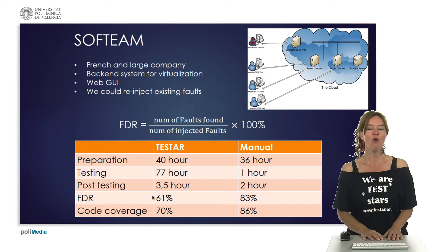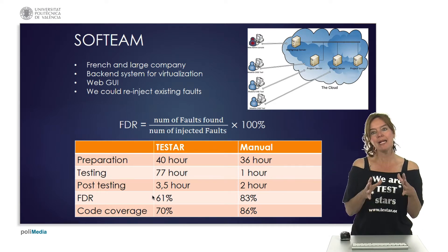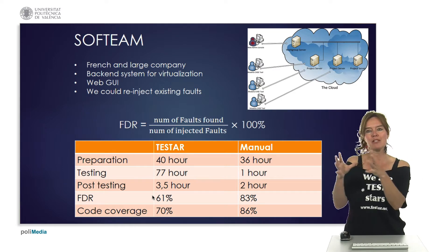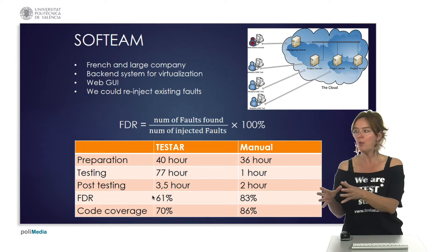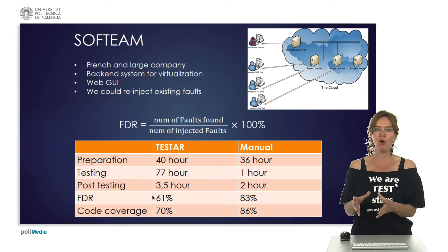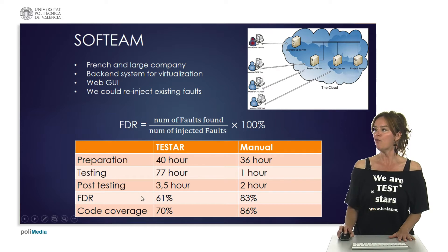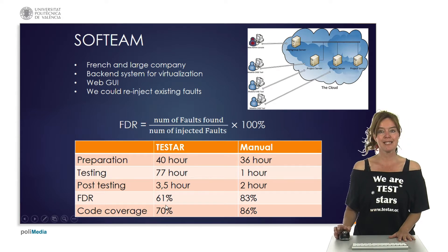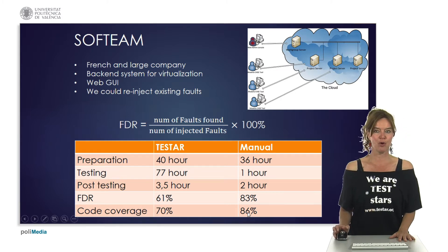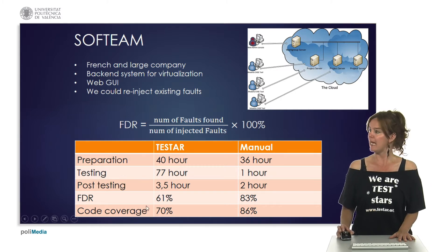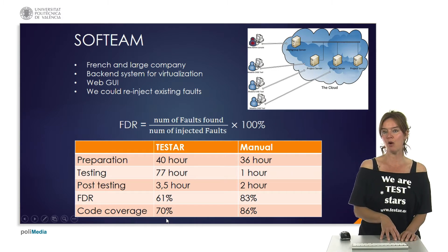61% fault detection rate is not so bad at all, and we can imagine that if we put a little bit of effort into customizing the tool towards the user requirements, we can immediately think of beating this 83% of their manual test suite. For code coverage the same - we had 70% code coverage compared to 86% for their manual test suite. Considering implicit oracles only and random testing only, this is quite a positive result.